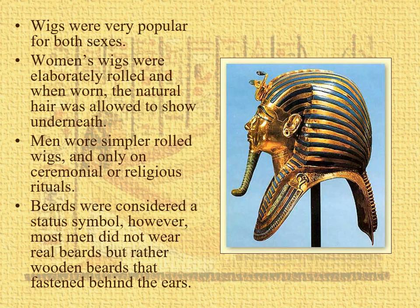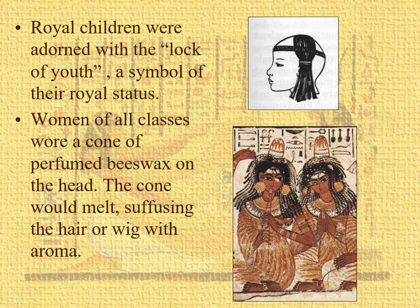Beards were good, but again — Egypt, hot — men don't wear beards. So you have a wooden one. You can see here it's just a little wooden stump braided with leather, with hooks that go behind the ears. The lock of youth — up in the upper part of the picture — is a symbol of royal status for royal children: shaved head but with that one little lock. Women of all classes would wear a cone of perfumed beeswax on the head. The cone would melt, diffusing the hair with a marvelous honey-like aroma. Beekeeping was very big in the Egyptian empire — when they opened some of the pyramids thousands of years later, they found perfectly good, still-edible honey.